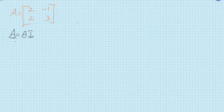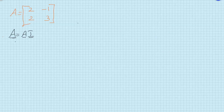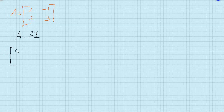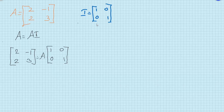So, we write the left-hand side matrix as [2, -1; 2, 3], which equals A times the identity matrix [1, 0; 0, 1]. I will also write the identity matrix I = [1, 0; 0, 1] separately, which I will use during the process.